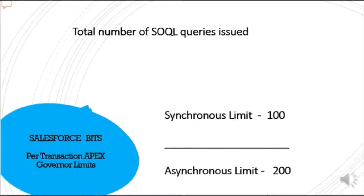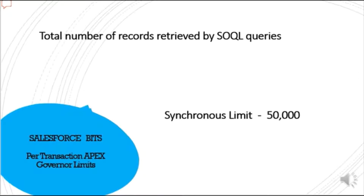The total number of SOQL queries issued is 100 for synchronous and 200 for asynchronous. Synchronous refers to batch Apex, schedulable Apex, or methods with the future annotation. That covers the SOQL queries limit.